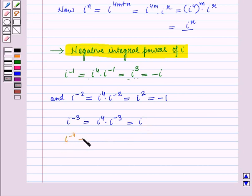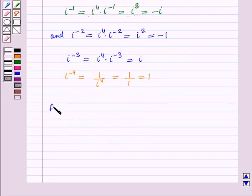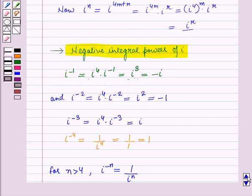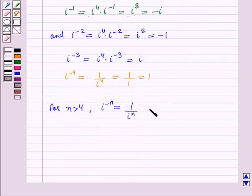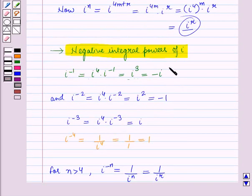Iota raised to the power minus 4 equals 1 over iota raised to the power 4. Since iota to the power 4 is 1, this equals 1 by 1 which equals 1. For n greater than 4, iota raised to the power minus n equals 1 over iota raised to the power n, which equals 1 over iota raised to the power r, where r is the remainder when n is divided by 4. So iota raised to any integer power takes one of 4 values: minus iota, minus 1, iota, or 1.